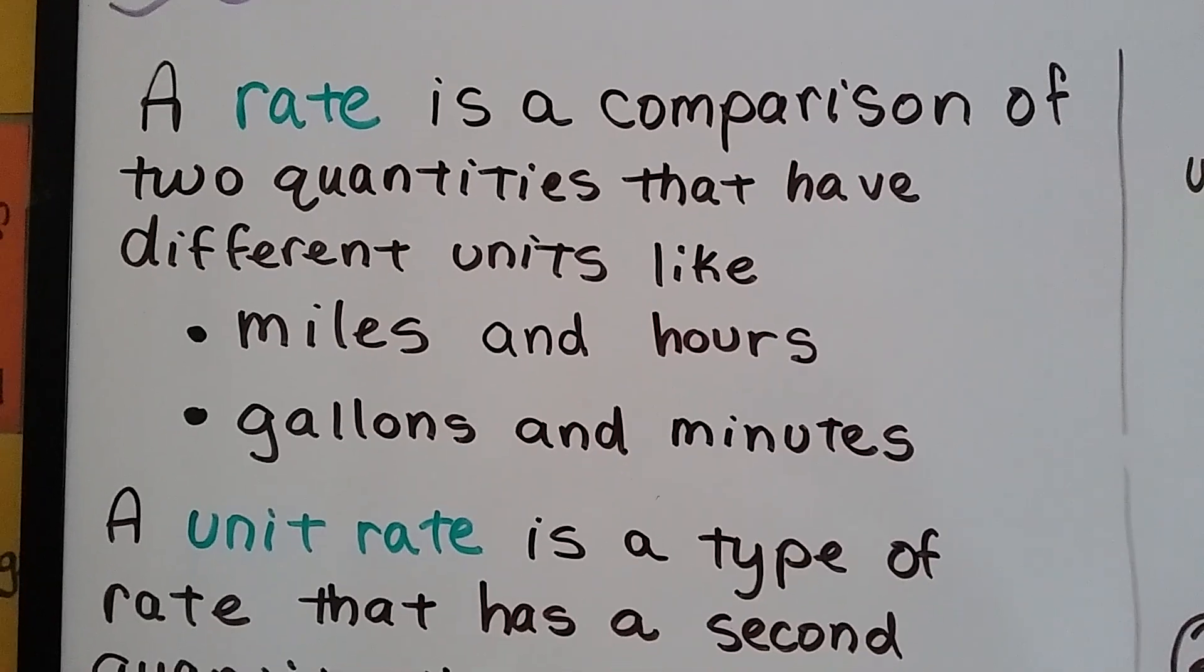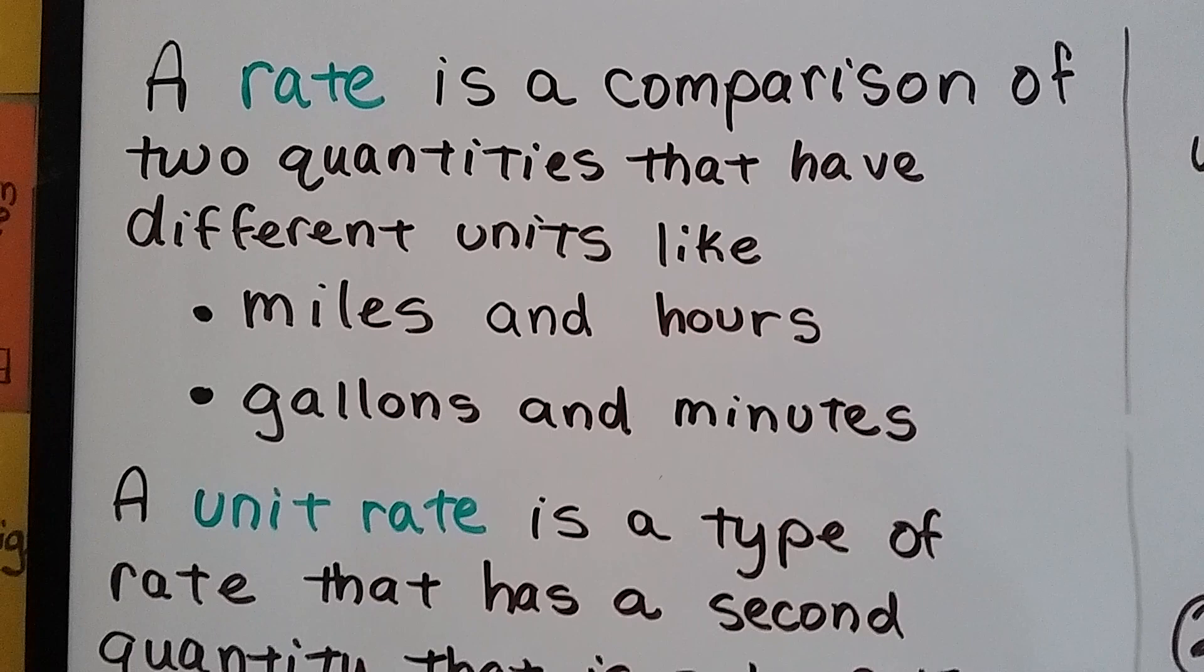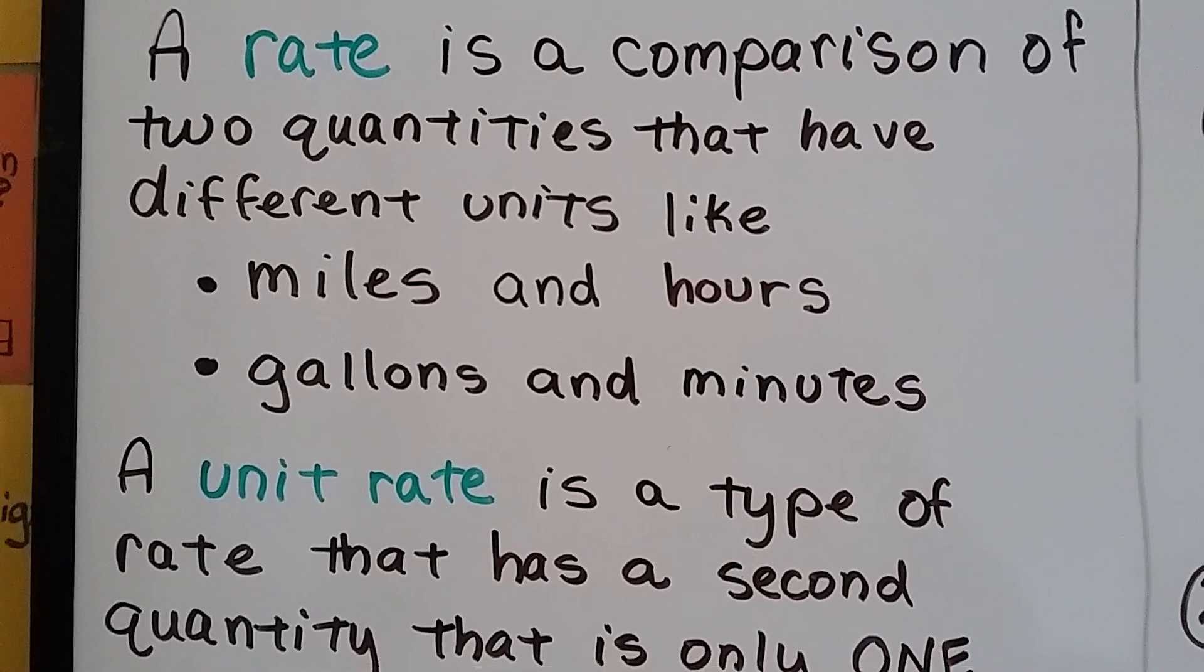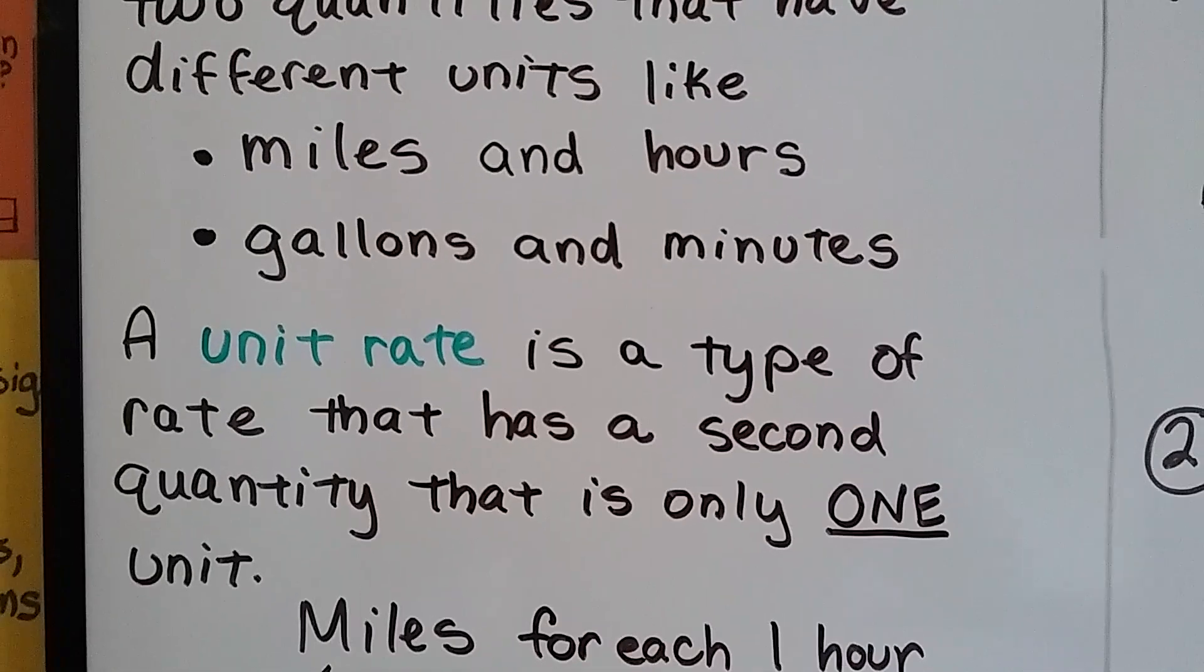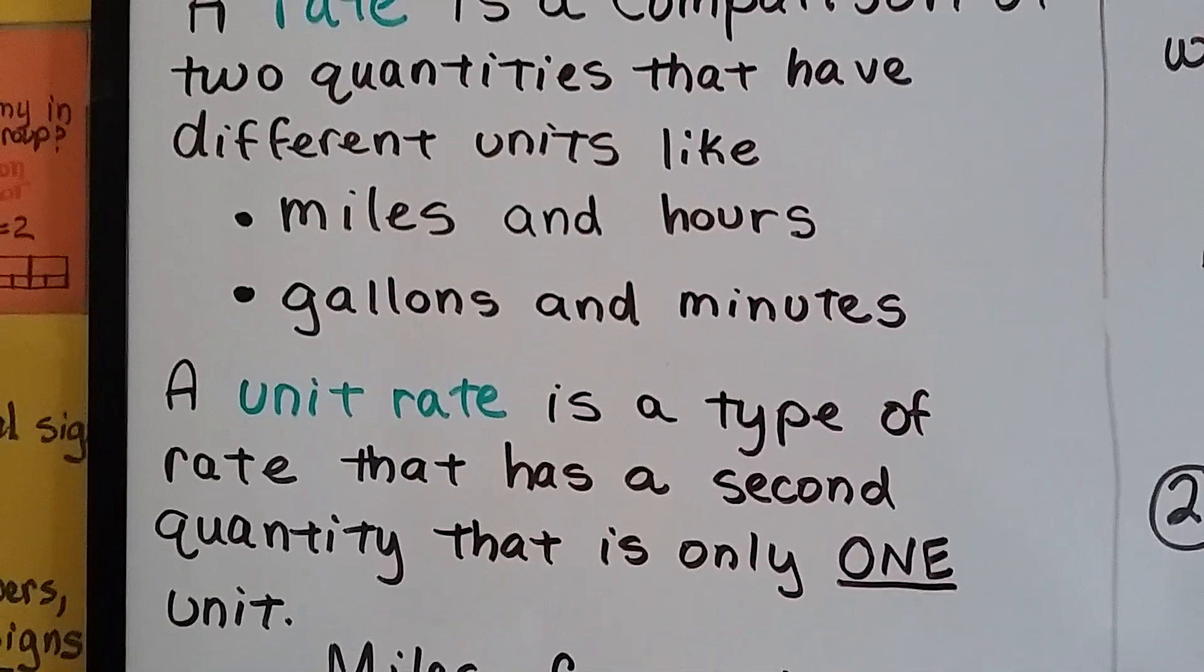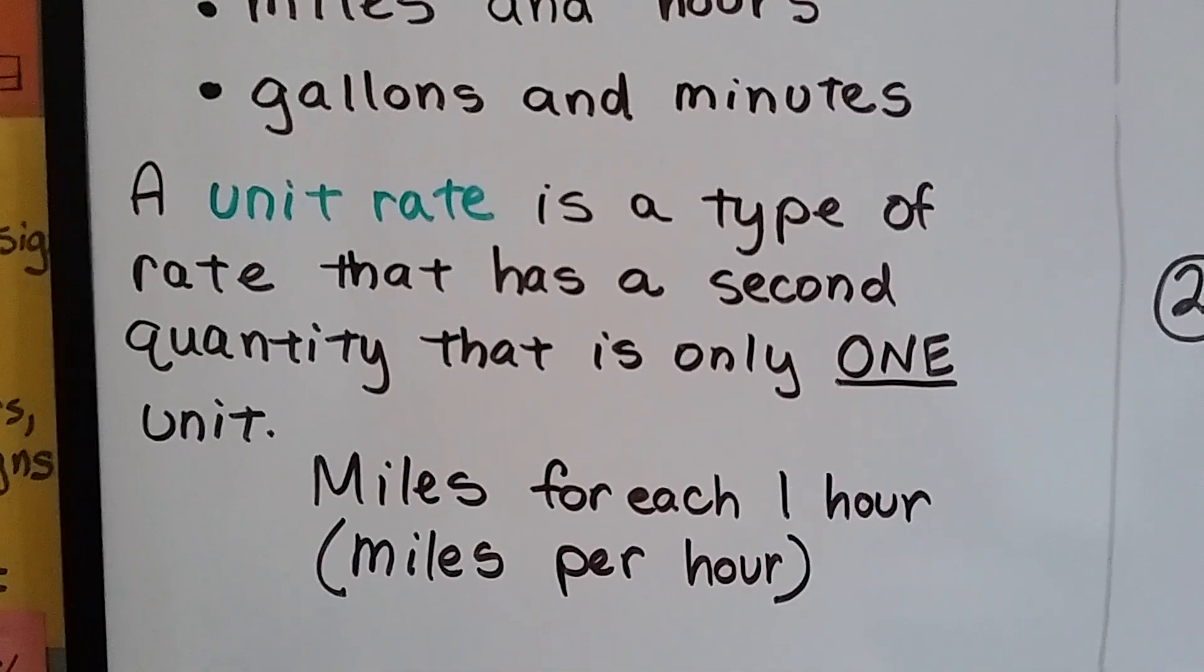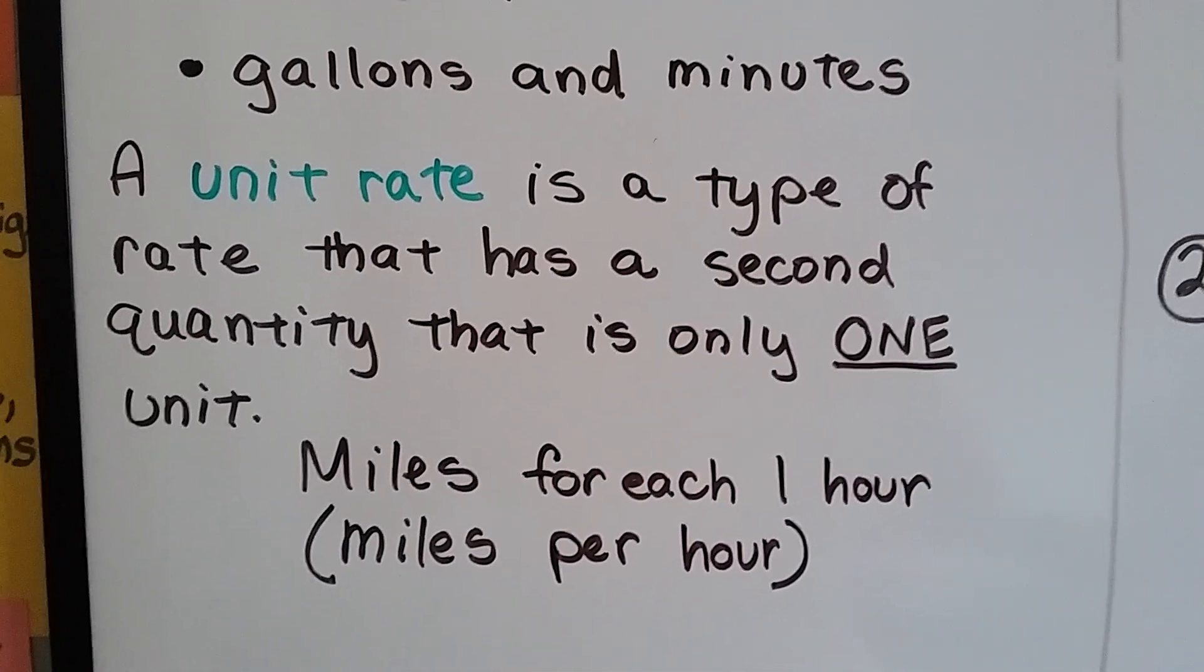A rate is a comparison of two quantities that have different units, like miles and hours, or gallons and minutes. And a unit rate is a type of rate that has a second quantity, like the hours or minutes, that is only one unit, like one hour, miles for each one hour, miles per hour.